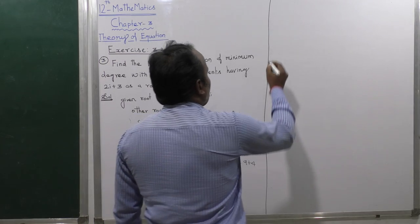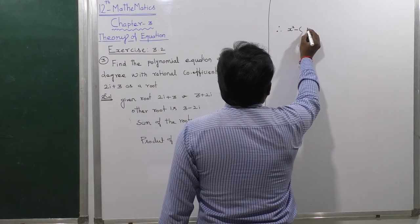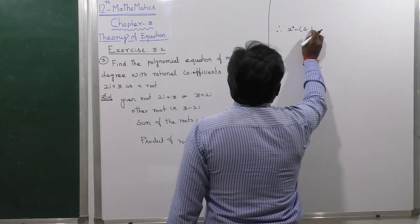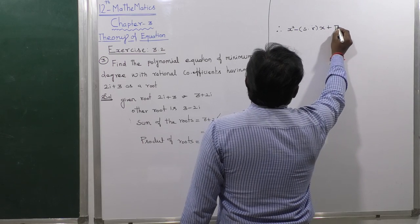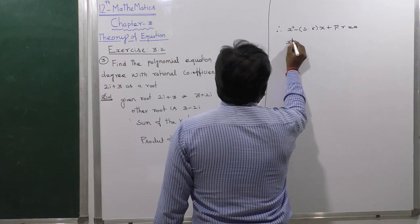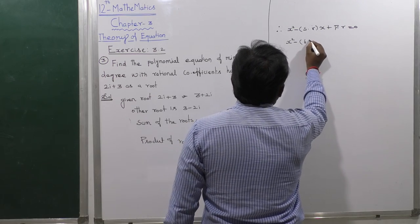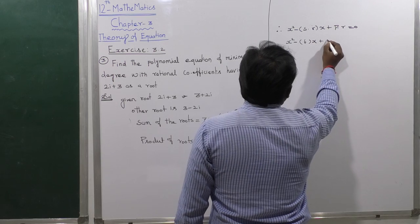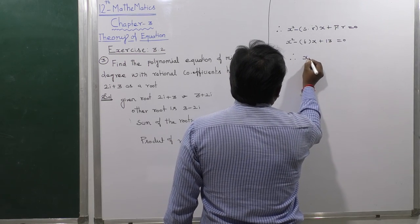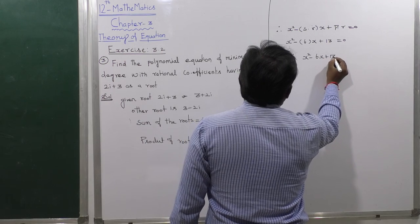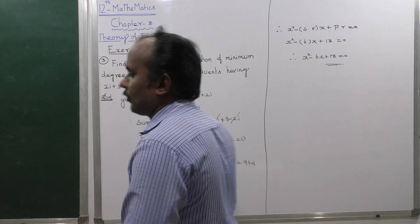Therefore the quadratic equation is x squared minus (sum of roots) times x plus (product of roots) equals 0, which gives x squared minus 6x plus 13 equals 0. Hence the result.